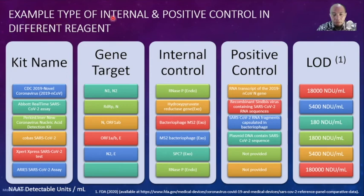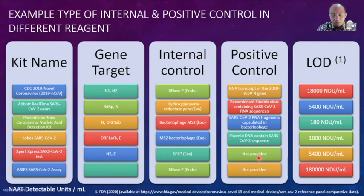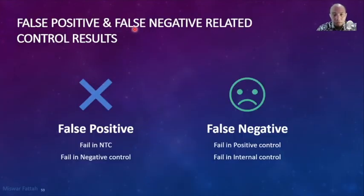Examples of internal control and positive control in different reagents: CDC uses RNase P (endogenous), and Aries from Luminex also uses endogenous. Most other reagents utilize exogenous controls. This type of control does not monitor the sampling phase. For cartridge-based systems, positive control is often not included in the kit. False positive can be monitored from failures in no-template control and negative control. False negative is indicated by failures in positive control or internal control.